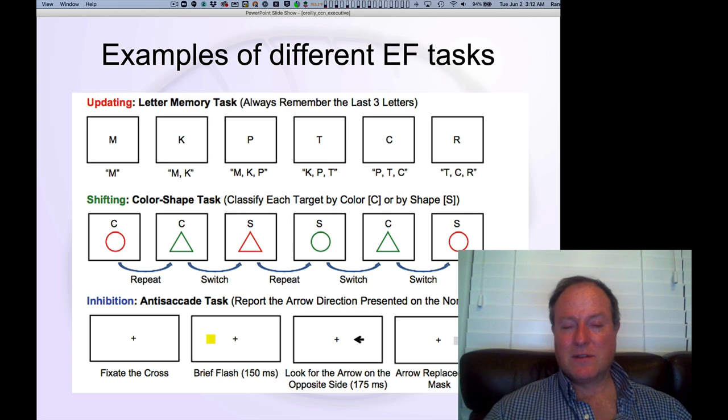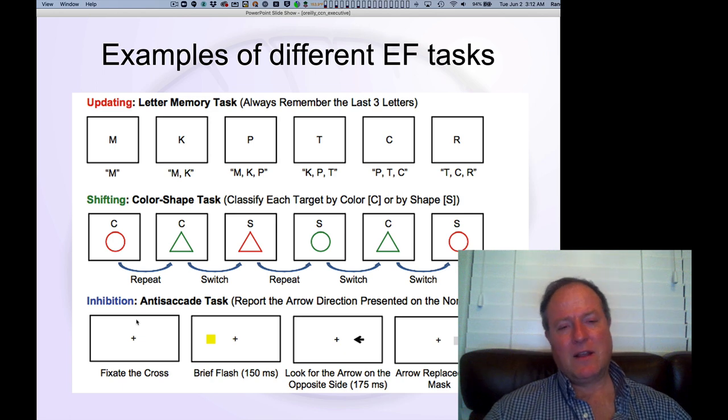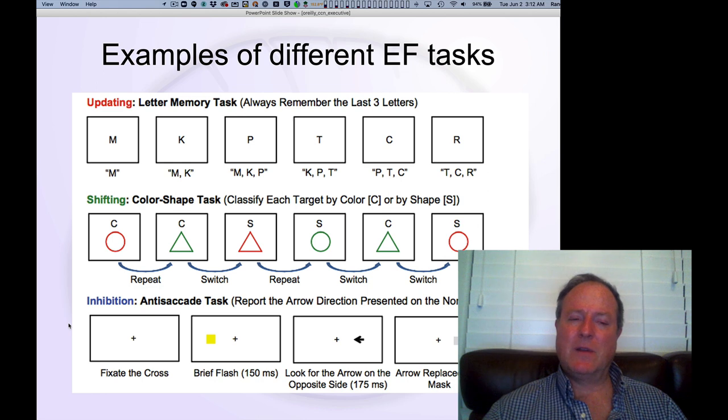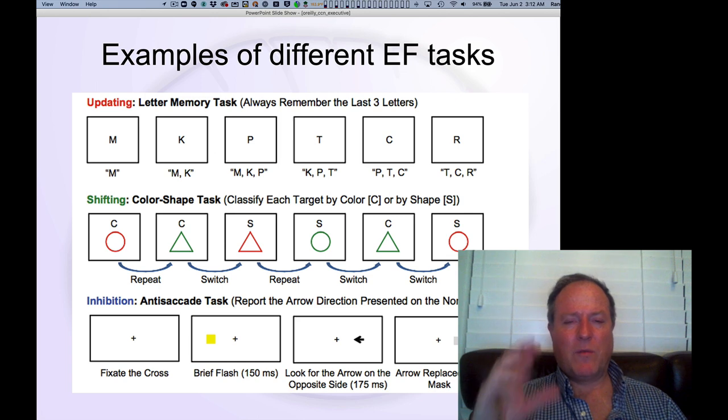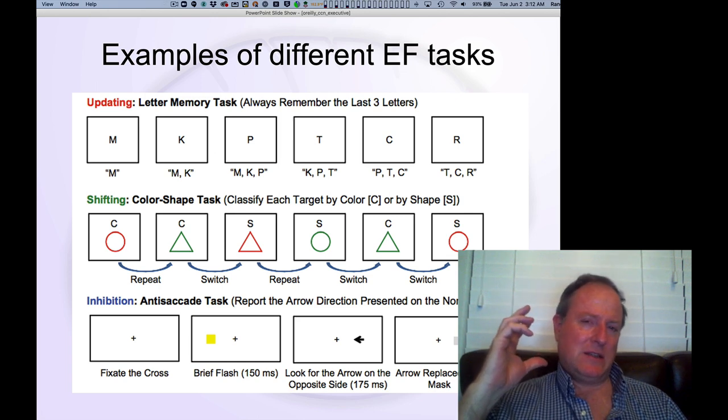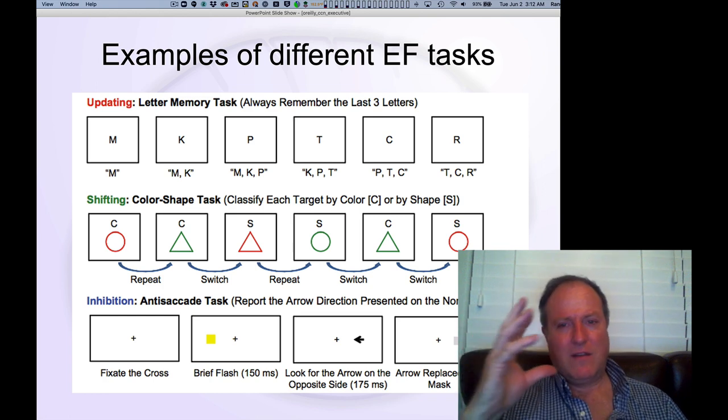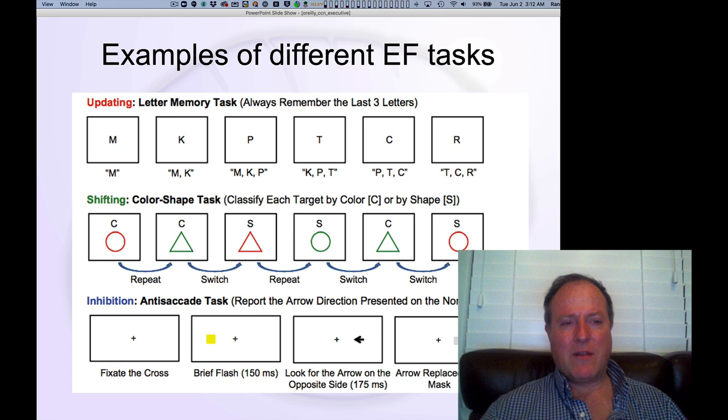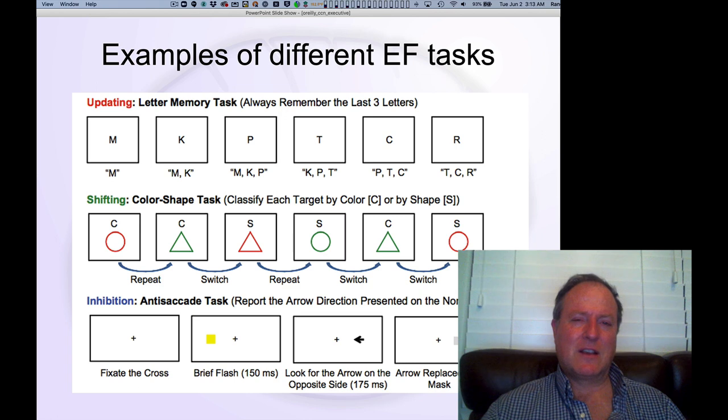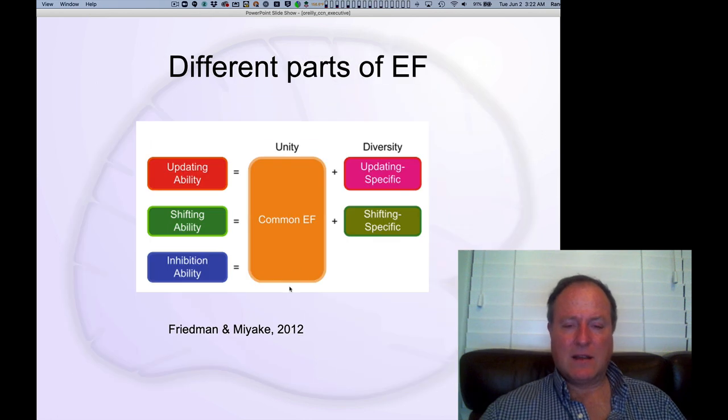This is very similar to the Stroop task that we looked at. That's another example of these quote-unquote inhibition slash active maintenance tasks. There's a lot of debate in the literature about is it inhibition, is it active maintenance? In general, from the neural models, we think it makes more sense to think about active maintenance as the core ability. This ability to robustly activate and hold on to this task representation that says focus on the saccade going the other way, focus on color naming. That really seems to be a better description of what's happening in the brain rather than don't do this other thing, which is more of the inhibition perspective. In general, there's fewer things you should be doing and a lot more things you shouldn't be doing, so it's more efficient to think about what you should do and not what you shouldn't do.